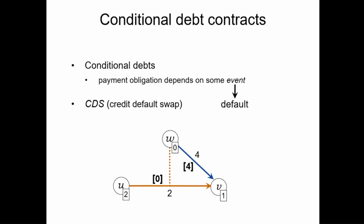CDSs are in fact a bit more sophisticated in the sense that the payment obligation is actually proportional to one minus the recovery rate of W. When W is not in default, there is no payment obligation on the CDS at all. When W cannot pay at all, the payment obligation is the entire weight of the CDS. But we can also be in between — for example, if RW is one half, the obligation on the CDS scales linearly between these two extremes.